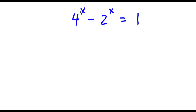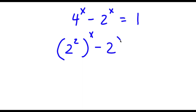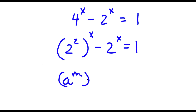So now I'm going to rewrite 4 as 2 to the power of 2 to the power of x, minus 2 to the power of x is equal to 1. I simply substitute in 2 to the power of 2 for 4. Now if I have something in the form a to the power of m to the power of n, this is the same thing as a to the power of m times n.